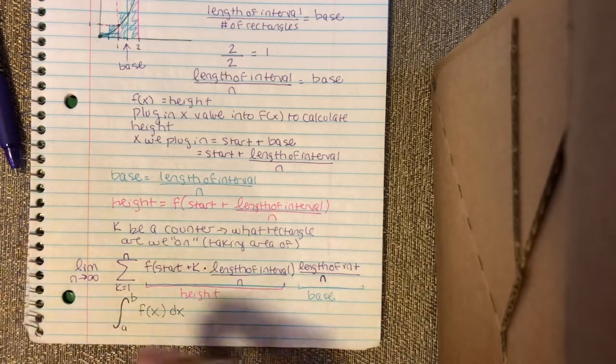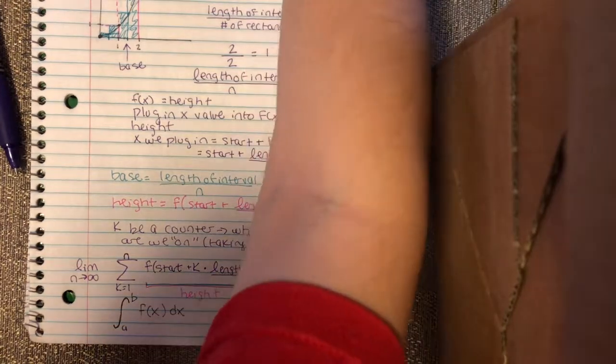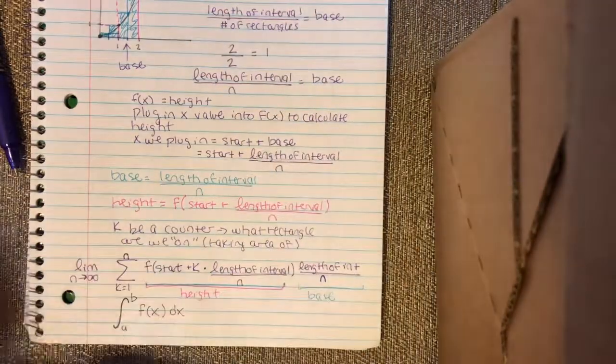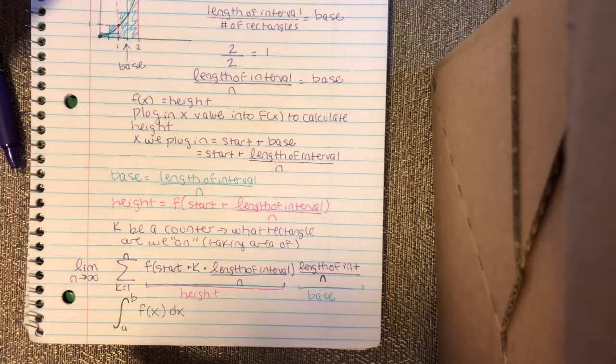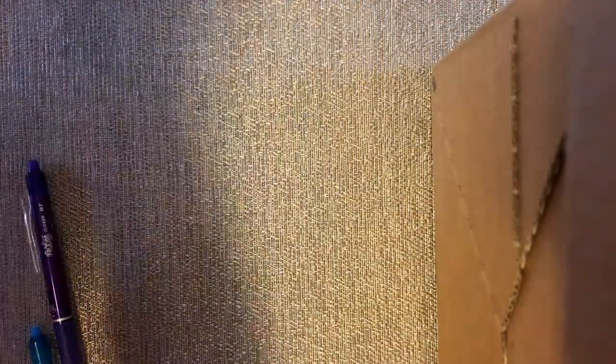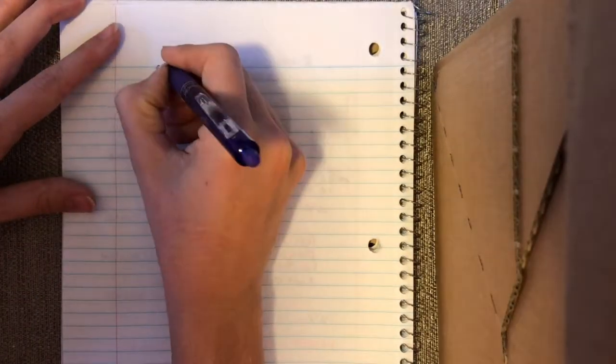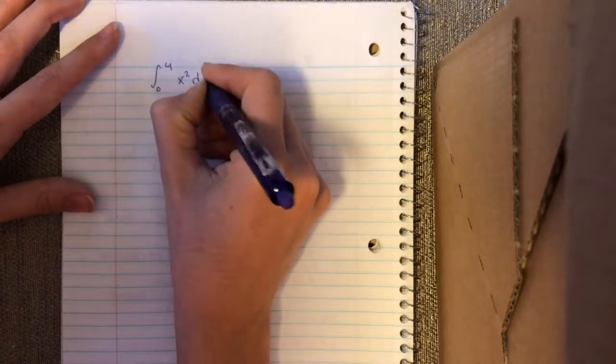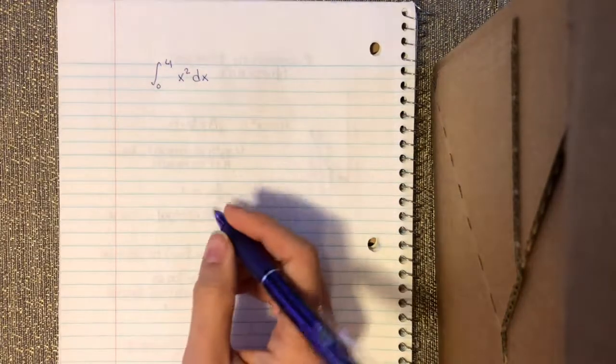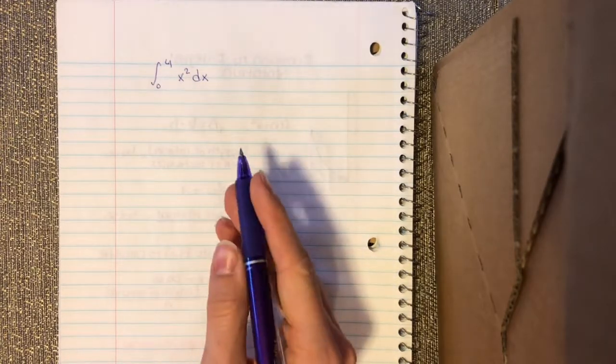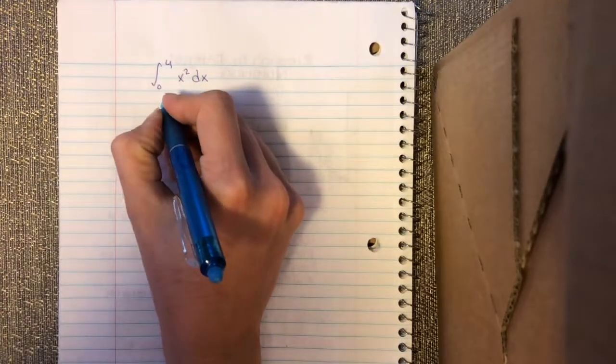All right, so I want to do one example. Let me wake up my computer again here. I'm going to flip the page and use this formula to write the Riemann sum notation that we've been using for the equation we've been using today. You have been calculating, for everyone who wasn't doing the activity today, they were trying to estimate the integral from zero to four of x squared dx just by using multiple Riemann sums: left Riemann, right Riemann, midpoint, and then trapezoidal at the end.